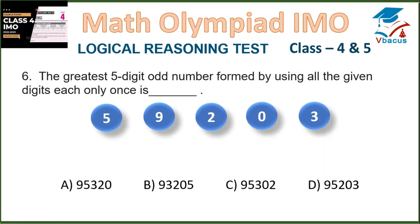Question 6. Find the greatest 5-digit odd number formed by using all the given digits, each only once. Remember, the number you are forming should be odd, not even. If we take digits from greatest to smallest, 9 will come first, then 5. For the remaining digits 2, 0, 3 — if we take 302 at the end it will be even, but if we arrange as 203 at the end it is an odd number. That option is D.